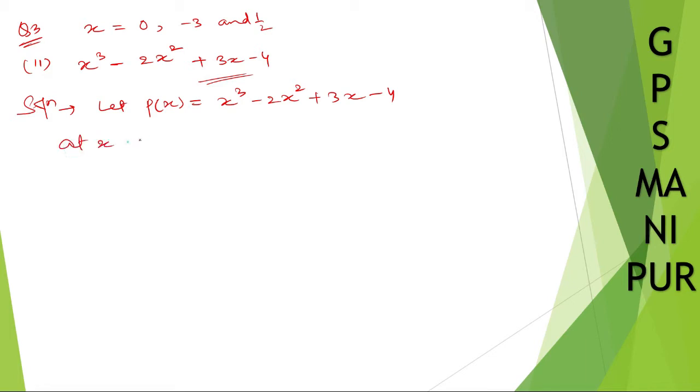At x equal to 0, p of 0 will be equal to - instead of x put 0 - so 0 cubed plus 2 into 0 squared plus 3 into 0 minus 4. This will be 0, 2 into 0 is 0, 3 into 0 is 0 minus 4. So the answer is minus 4.